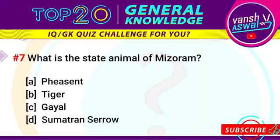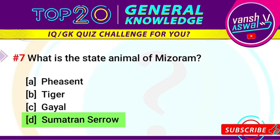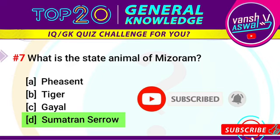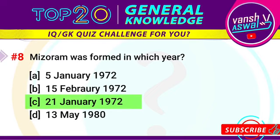Our seventh question is: what is the state animal of Mizoram? The correct answer is the Sumatran Serow. Eighth question: Mizoram was formed in which year? The correct answer is 21 January 1972.